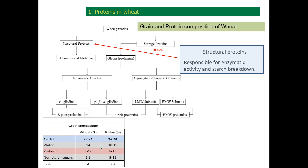Grain proteins can also be classified according to their function into structural or metabolic — the non-gluten proteins — and storage or glutelins. The gluten storage proteins constitute 80-85% of the total wheat grain, while the other 15-20% of metabolic proteins are responsible for enzymatic activity and starch breakdown.